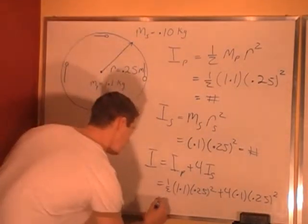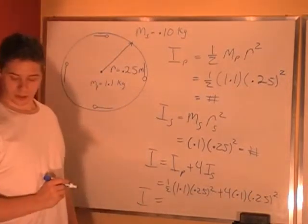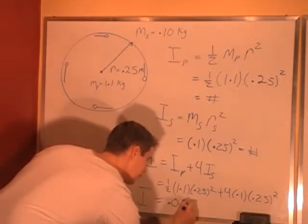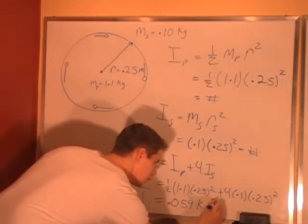If we multiply this all through, we get a total moment of inertia of 0.059 kilogram meter squared.